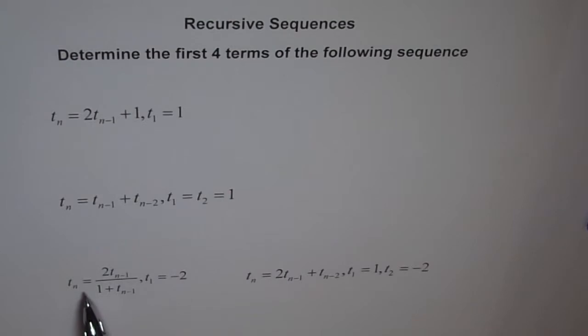Here it is Tn equals 2 times Tn-1 divided by 1 plus Tn-1. This is the nth term, where T1 is given to us. And then Tn equals 2 times Tn-1 plus Tn-2, where T1 and T2 are given as 1 and minus 2 respectively. So do these two on your own. I will show you how to do the first two.